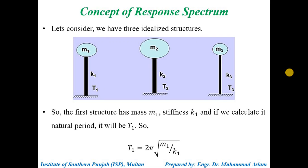So now we are considering an idealized structure. Ek hamare paas simple idealized structure hai jiske andar hum different single degree of freedom systems consider kar rahe hain. Aap figure mein dekh sakte hain ke hamare paas teen different single degree of freedom systems — ya teen multi-story buildings hain. Here we have mass 1, mass 2, mass 3. Mass 3 is the least mass, mass 1 is the mediocre, mass 2 is the highest mass. Isi tarah se mass 1 ke liye jo column provide kiya hai that is mediocre column with stiffness K1. Mass 3 ke liye K3 smaller column hai. Mass 2 ke liye jitna mass hai usi ke saath stiffness K2 ka column provide kiya hai. In teenon masses aur stiffnesses ko use karke time periods calculate karte hain — T1, T2, and T3 for the three cases.